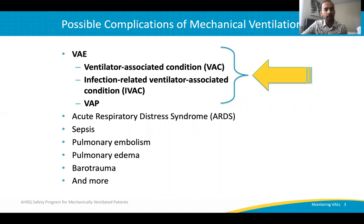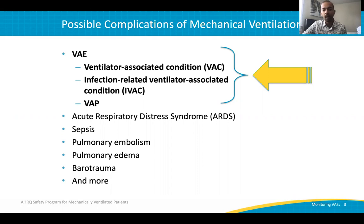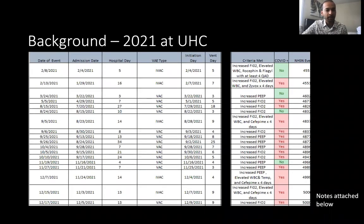Possible complications of mechanical ventilation include VAEs, which comprise VACs, IVACs, and VAPs. Other clinical syndromes also likely to complicate your ventilator stay include ARDS, sepsis, pulmonary embolism, pulmonary edema, barotrauma, and so on. The background behind this lecture is that in 2019 and 2020, things were very different — there were fewer acute respiratory failure patients with severe ARDS per day or per month.